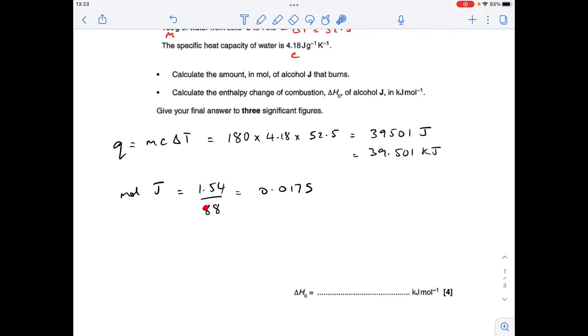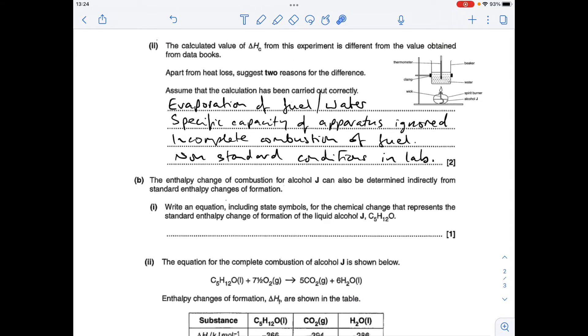Next thing we do is work out how many moles of alcohol J has actually burnt, so it's mass over MR, 0.0175. And then convert that to a delta H, an enthalpy change of combustion. It's the Q value in kilojoules divided by the moles, so it's minus because it's exothermic, 2257.2 is the calculator value, but we've got to give it to three significant figures so it's minus 2260.